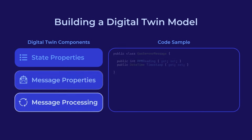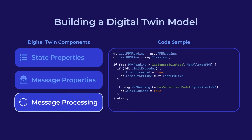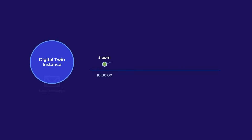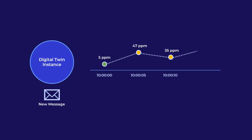Now add the message processing code to specify how each digital twin instance should update. In our simple example, the digital twin saves the latest readings and runs an algorithm to decide whether to raise an alert. Here, we're generating an alert when the gas level either exceeds 50 ppm for more than 30 seconds or spikes to 200 ppm. State properties allow the digital twin to track trends over time to better detect unsafe conditions.